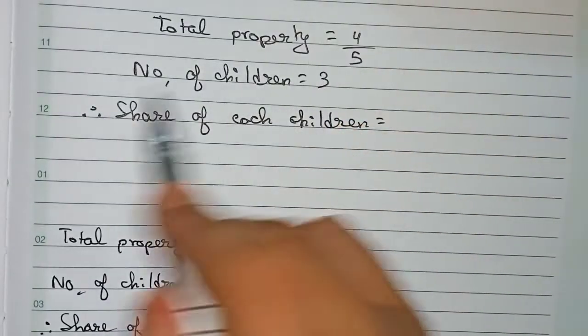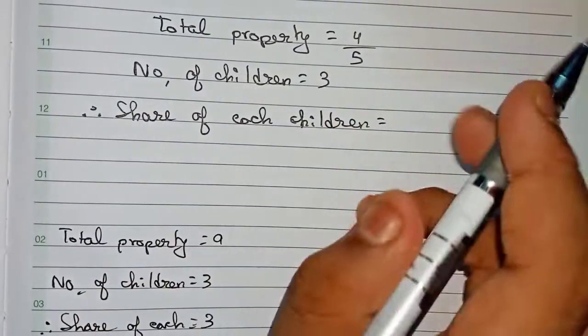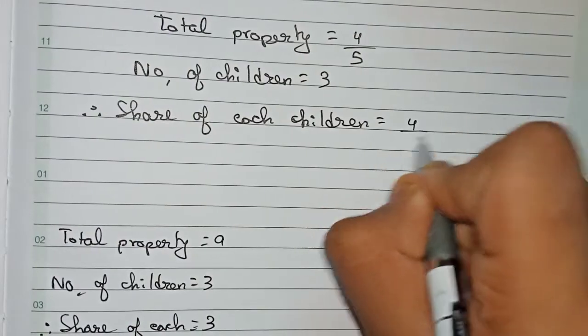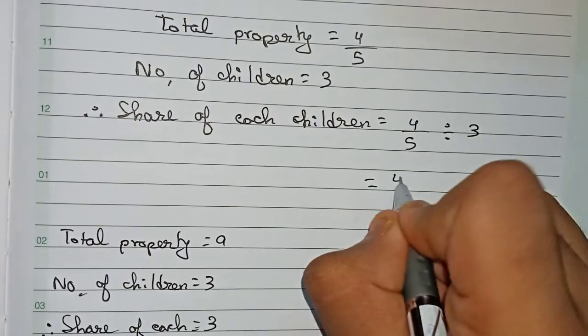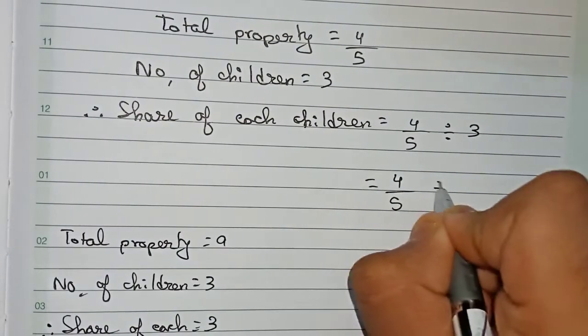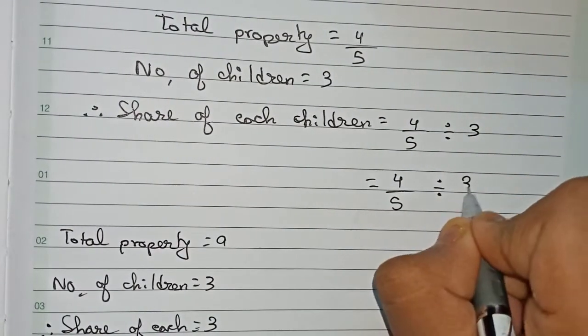we have to divide total property by the number of children. So it becomes 4/5 divided by 3. To properly understand this, we write 4/5 divided by 3/1.